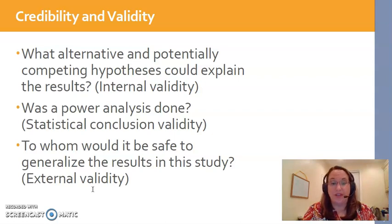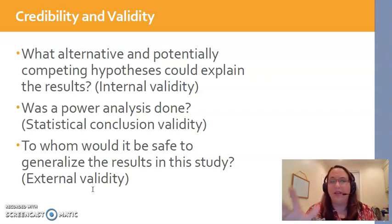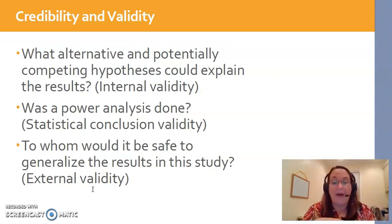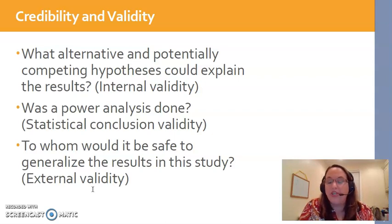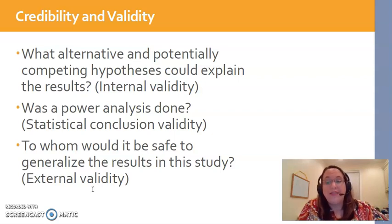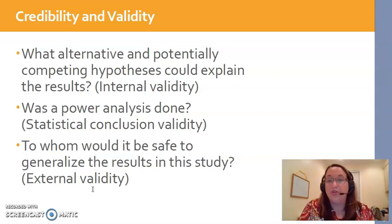For statistical conclusion validity, one thing to check — especially in the methods section of a study — is whether the researchers did a power analysis. It's a statistical calculation that gives us a minimum number we should have as our sample in order to have adequate power to trust our statistical outcomes. For example, if a power analysis tells me I need 240 people in my study, I've got to make sure I have at least 240 people so I can trust the statistical conclusions drawn from the study.